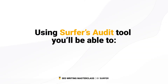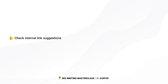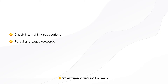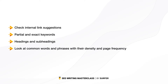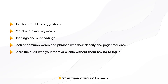Using Surfer's audit tool, you'll be able to check internal link suggestions, find partial and exact keywords, check out headings and subheadings, look at common words and phrases with their density and page frequency, and you'll be able to share the audit with your team or clients without them having to log in.